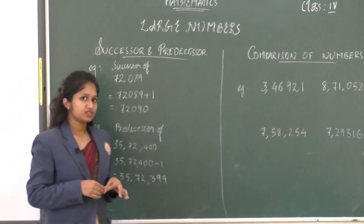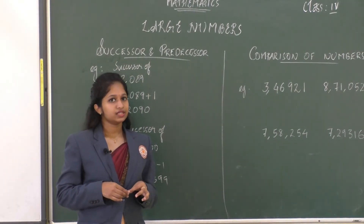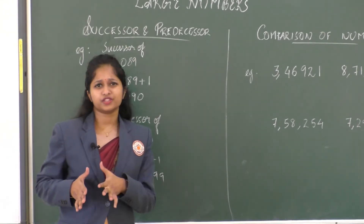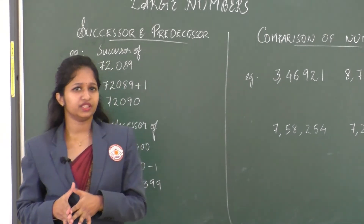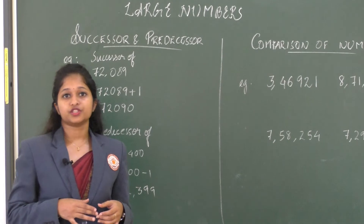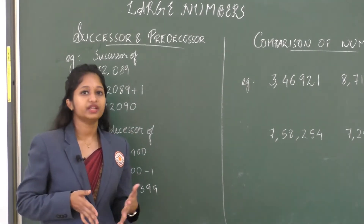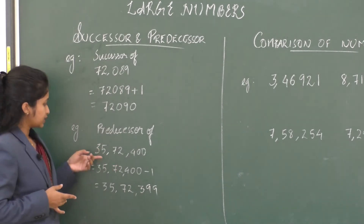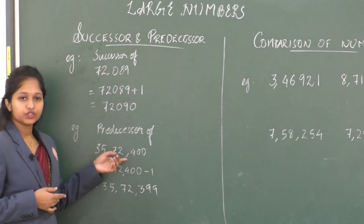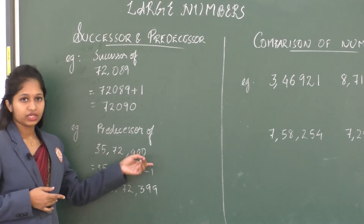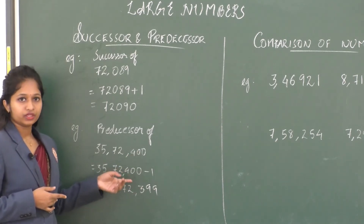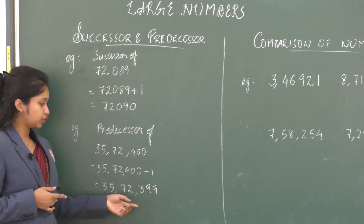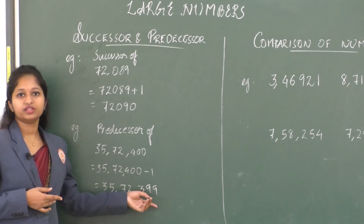The predecessor of a number is the number that comes just before it. So the predecessor of 20 is 19, and predecessor of 100 is 99. For a larger number — here I have 35,72,400 — when we subtract 1 from it, we get 35,72,399.